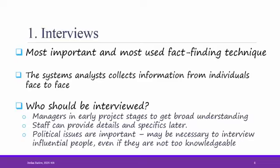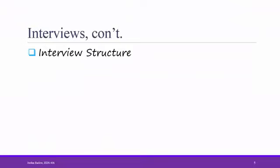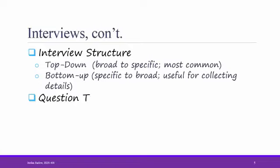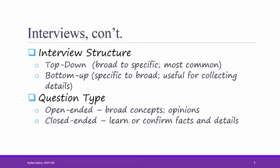When you're interviewing, make sure to match the type of question you use to the person that you're interviewing. For example, if you're interviewing a manager, keep questions broad and high-level. If you're interviewing staff, ask questions about day-to-day work. There are several ways to structure an interview. The most common way is the top-down approach. That is, start with really broad questions and then get more specific. Another way to do it is the bottom-up approach. This way is useful for collecting details. There are three types of questions that you can ask in interviews. One question type is not necessarily better than the other. Just consider the types of questions that you want to ask depending on what you want to find out. There are open-ended questions. These are good for finding out broad concepts and opinions. And there are closed-ended questions. These are good for learning or confirming facts and details. It's good when you're using the top-down approach to start with open-ended questions and then move to some closed-ended questions to make sure you understand the exact details.